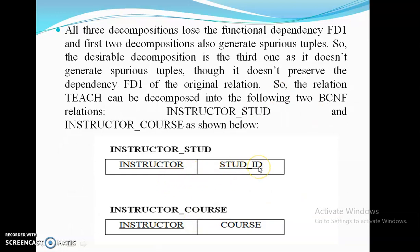So we adopt Instructor-Course and Instructor-Student ID as the two relations to achieve BCNF. However, there is still a problem: it does not preserve dependency FD1 of the original relation. The original relation had Student ID along with Course identifying a particular instructor, and that FD1 cannot be preserved in this decomposition.